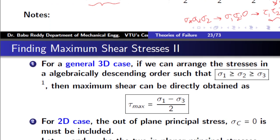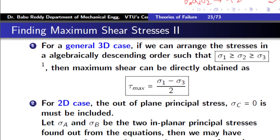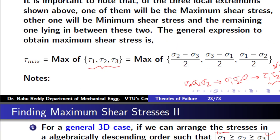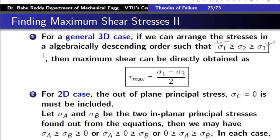In the general 3D case, all six stress components and all three principal stresses exist. For convenience, we arrange sigma 1 as the maximum, sigma 3 as the minimum, and sigma 2 in between. If you follow this convention, you don't need to calculate all three shear stresses — simply arrange the principal stresses in decreasing order and take the first minus the last to directly get tau max. This saves time and is used for the general 3D case.